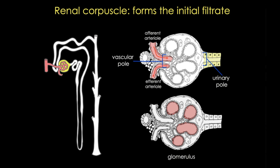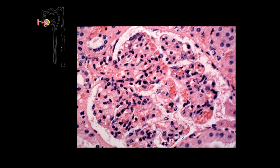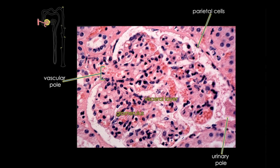Here's a magnified image of a renal corpuscle showing the vascular pole, the urinary pole, and the glomerulus. The internal layer of the capsule closely envelops the glomerular capillary — we call that the visceral layer — and the outer layer or parietal layer forms the surface of the capsule. The space between the layers is called the capsular or urinary space, and this is what receives the fluid filtered through the capillary endothelial wall and the visceral layer.